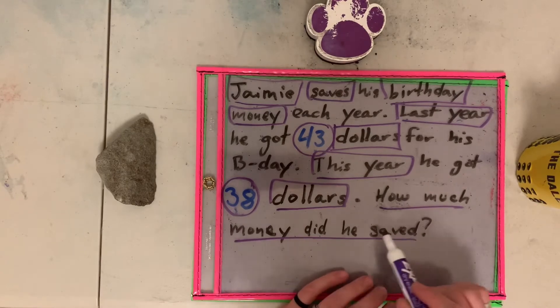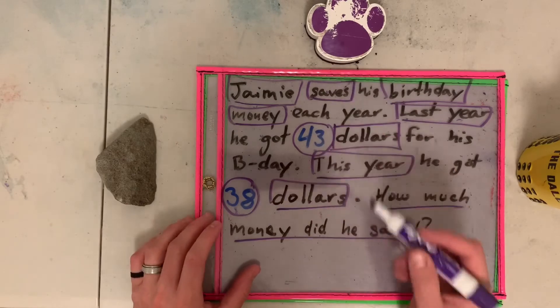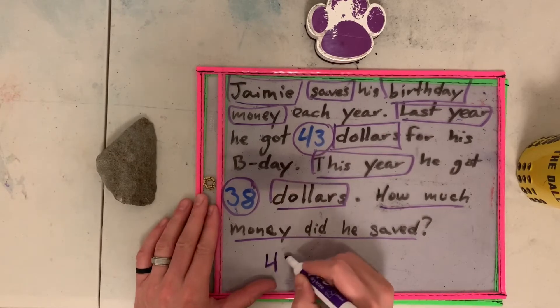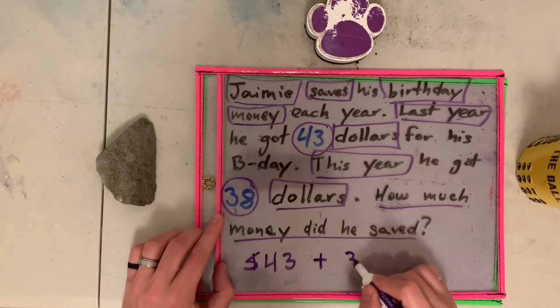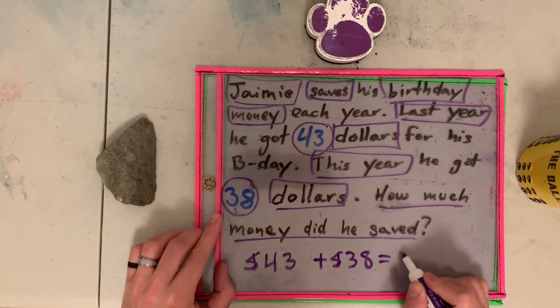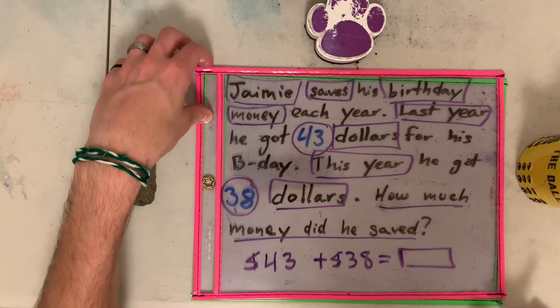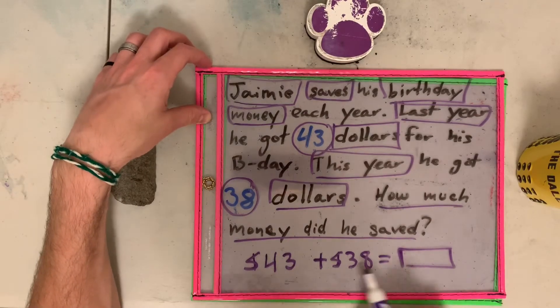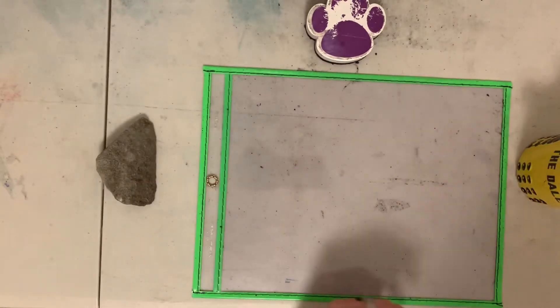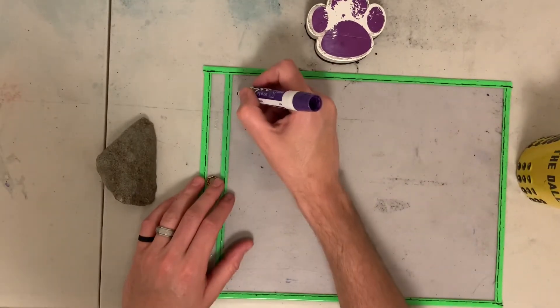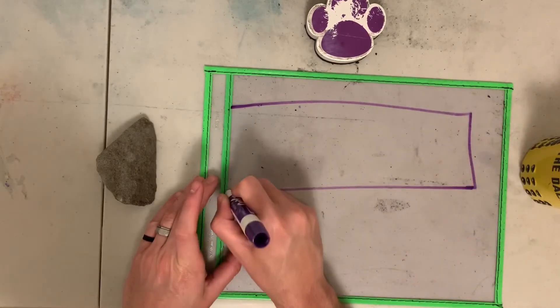The question is, how much money did he save? So we're talking here right now that Jamie saved forty-three dollars last year. And this year he saved thirty-eight. So in first grade he saved forty-three. In second grade, thirty-eight dollars. When we're saving, we need to think about this. How much money did he save? So we're trying to find how much money. Hay que juntar estos dos números. So we have forty-three dollars plus thirty-eight dollars. And we need to find this answer.